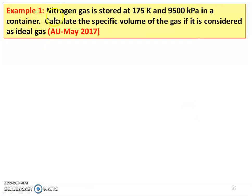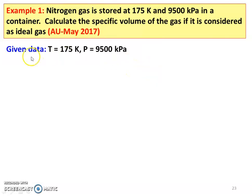Example 1. Nitrogen gas is stored at 175 Kelvin and 9500 kPa in a container. Calculate the specific volume of the gas if it is considered as an ideal gas. This is a May 2017 question. Given data: temperature is 175 Kelvin and pressure is 9500 kPa. We have to find specific volume using the ideal gas equation.